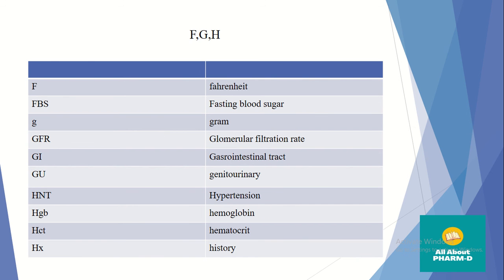F stands for Fahrenheit. FBS means Fasting Blood Sugar. Small g means gram. GFR means Glomerular Filtration Rate — basically a test to check how the kidneys are working. GI means Gastrointestinal tract, i.e., the digestive system.